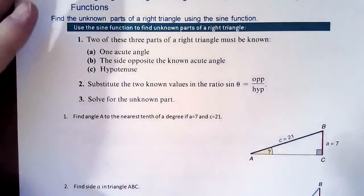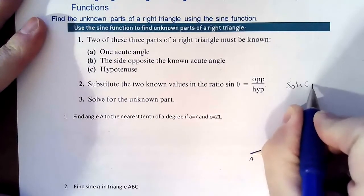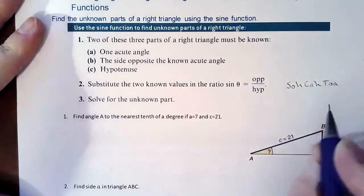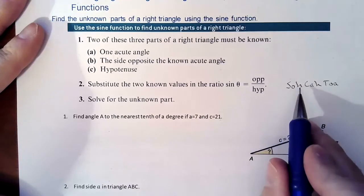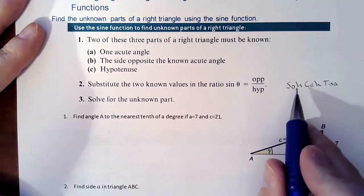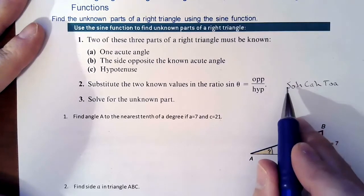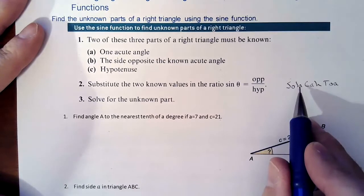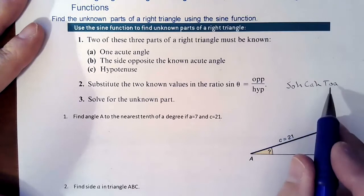So how would we know that? We're going to use SOHCAHTOA to help us solve it. Every one of these situations is going to be where we have an opposite and a hypotenuse pieces, or we're looking for something and an angle. So we won't know anything about the adjacent, which would involve the other two.